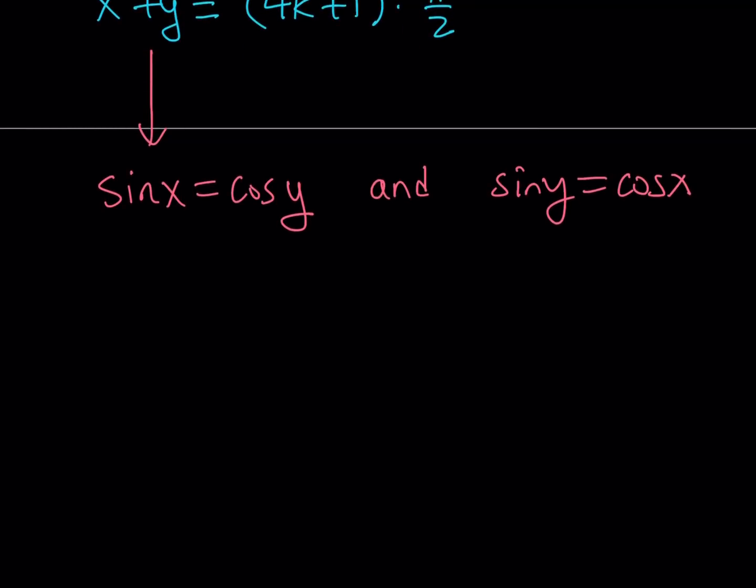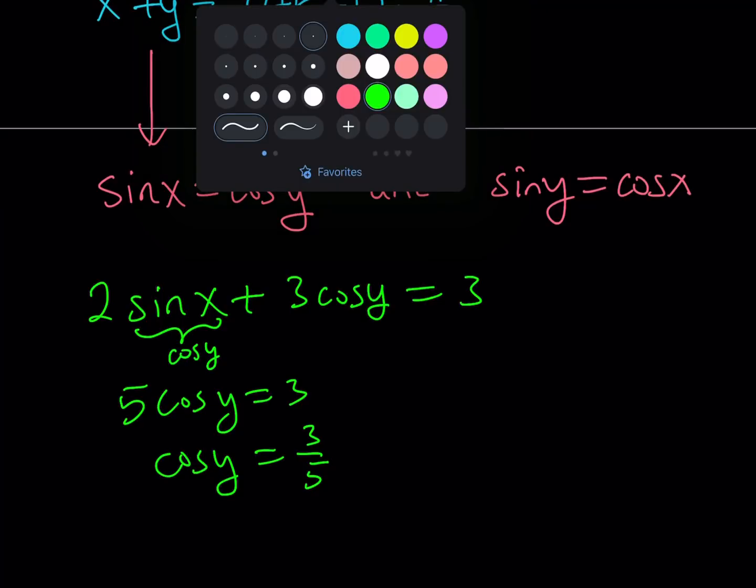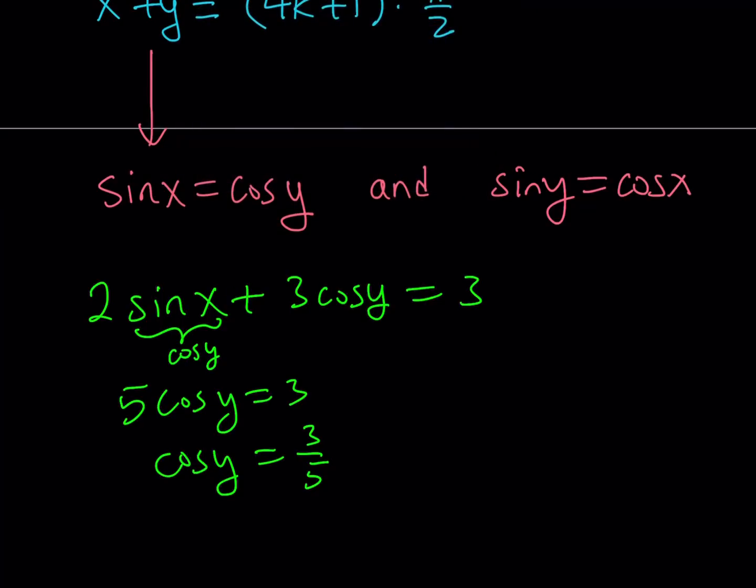Our original equations were 2 sine x plus 3 cosine y equals 3. Now, in this equation, if you replace sine x with cosine y, you get 5 cosine y equals 3, and that gives you cosine y equals 3 fifths.